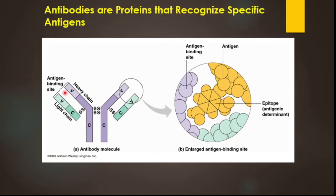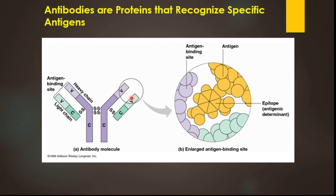Here you can see the antibody structure — two parts: variable chain and constant region; two heavy chains and two light chains. The circled part is where antigen-antibody binding occurs — the antigen will bind there. The word 'epitope' refers to that part of the antigen which binds with the antibody. The variable region, circled here, is called the antigen-binding region.